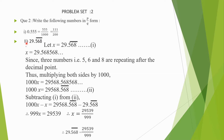Second question: 29.568 bar. Let us suppose x is equal to 29.568 bar — let this be equation No. 1. So x can be written as 29.568568 and so on. Since 3 numbers, that is 5, 6 and 8, are repeating after the decimal point, we will multiply both sides by 1000. Therefore 1000x is equal to 29568.568 bar — let this be equation No. 2.